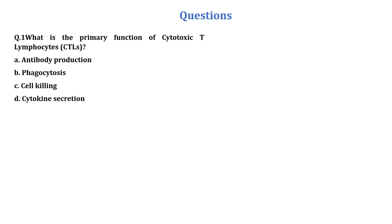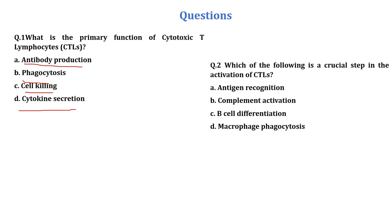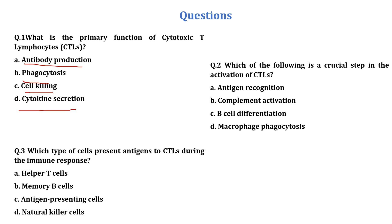Some MCQ-based questions: First, what is the primary function of cytotoxic T lymphocytes — antibody production, phagocytosis, cell killing, or cytokine secretion? Second, which of the following is a crucial step in the activation of CTL — antigen recognition, complement activation, B cell differentiation, or macrophage phagocytosis? Third, which type of cell presents antigen to CTL during the immune response — helper T cells, memory B cells, antigen-presenting cells, or natural killer cells? Please provide your answers in the comment section.